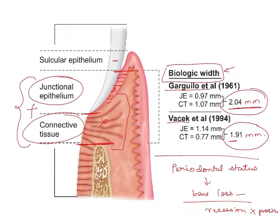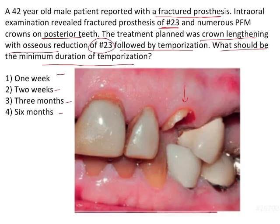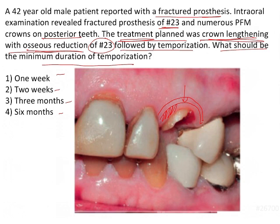Coming back to the question — the reason I explained all this is because the treatment plan here was crown lengthening, meaning some amount of gingival tissue is removed, with osseous reduction where some bone will also be removed around the tooth in order to maintain the biologic width. For the entire healing process to be complete, you need at least three to six months.